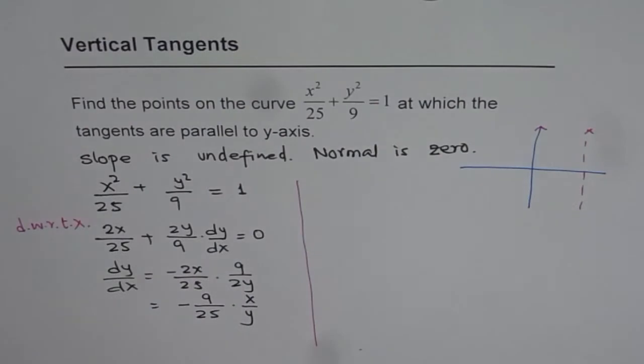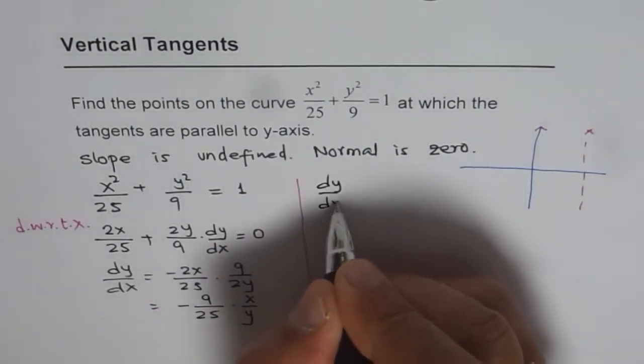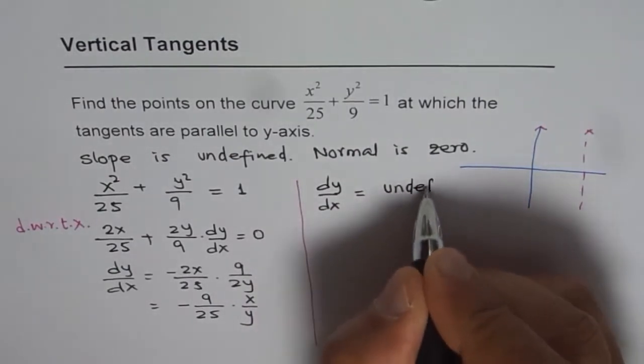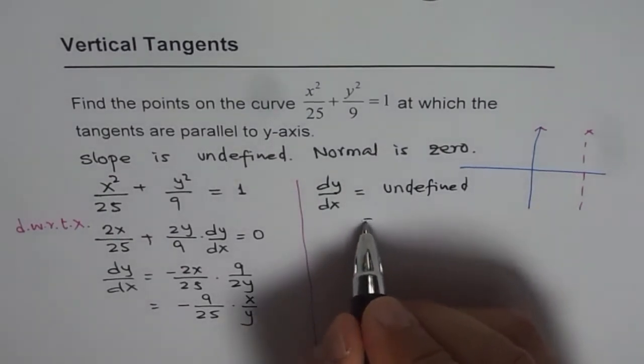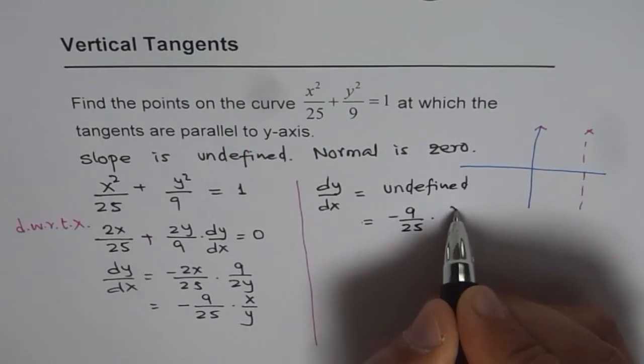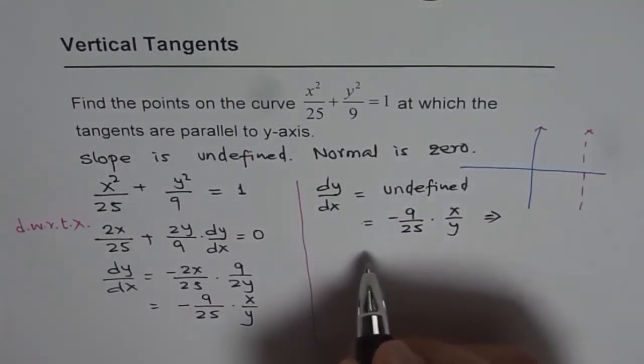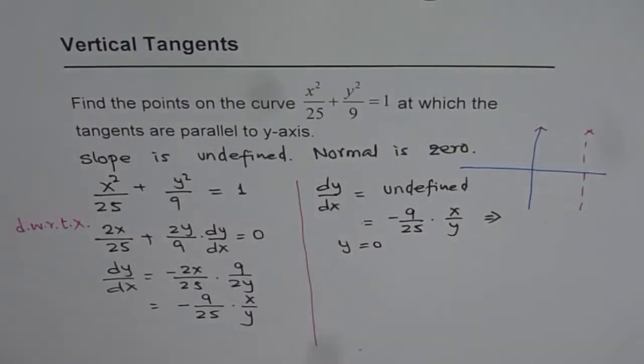Now dy/dx also gives us slope. So what do we need? We want dy/dx to be undefined. And in this case which is minus 9 over 25 times x over y, this implies that y is equal to 0. Only then this slope will be undefined.